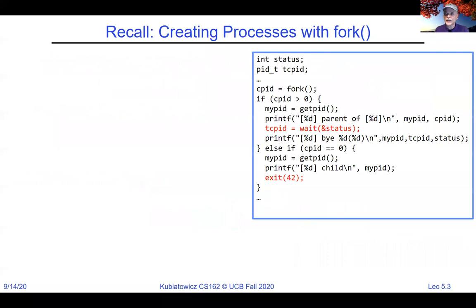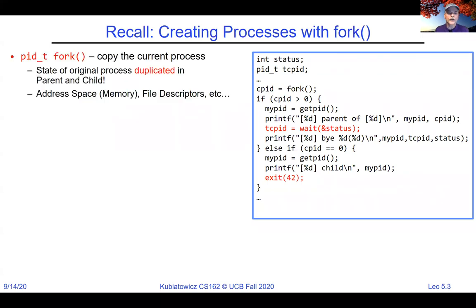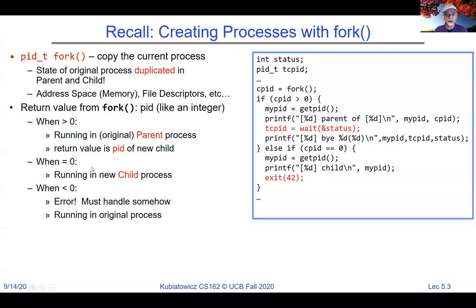I also wanted to keep in mind what we talked about: creating processes with fork. Fork basically copies the current process and all of its address spaces. The state of the original process is duplicated in the parent and the child — that's the address space, the file descriptors, et cetera. When fork returns, once the two processes have been created, fork returns in each of them. In one of them it returns something bigger than zero — that's the parent — and in the other it returns zero, and that's the child.